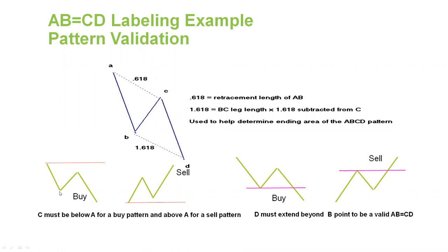For the structure of the pattern, on the buy illustration the C point must be below where the A point is — it can come up to A but cannot exceed it. The D point must extend beyond B. Looking at our illustration, the C point is below A and our D point is below B. This little graph will help you as you're studying this pattern to know if you have the basic valid structure.